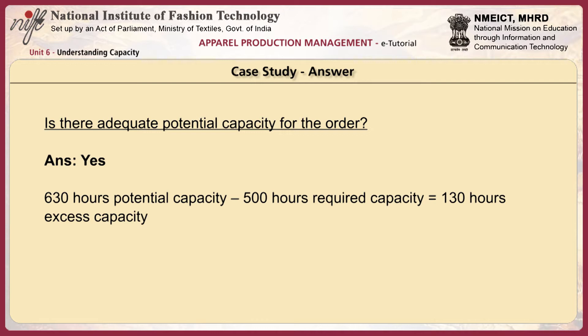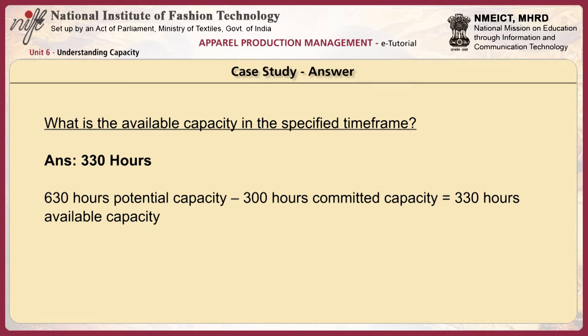Is there adequate potential capacity for the order? As calculated, we already have 630 hours of potential capacity, and the required capacity for the new order is 500 hours. So yes, we have 130 hours of excess capacity currently for the order. Now let us see if we have available capacity in the specified timeframe — we already committed a couple of orders. We have 630 hours of potential capacity and 300 hours already committed, which leaves us with 330 hours of available capacity.